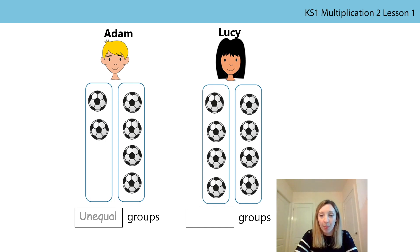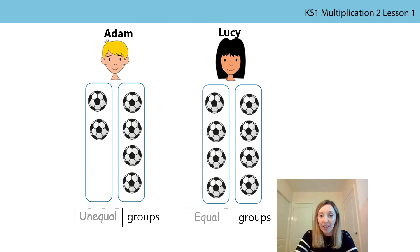Let's look at Lucy's footballs. Does Lucy have the same or a different number of footballs in each of her groups? Lucy has the same number of footballs in each of her groups — we can see that because of how they're lined up. Can you remember the word to describe groups when there is the same number of the object in each of them? Equal. So Lucy has equal groups because she has the same number of footballs in each of her groups.